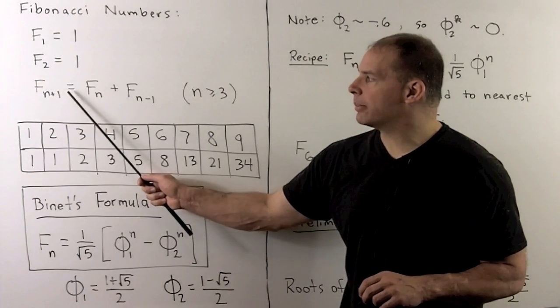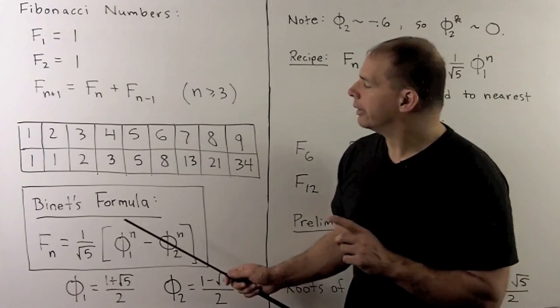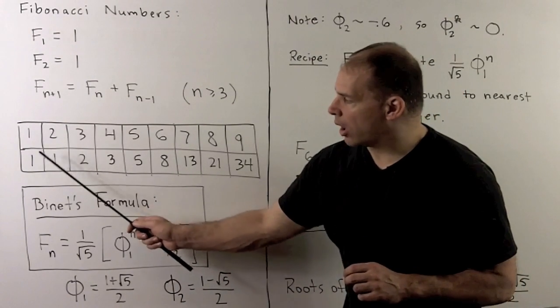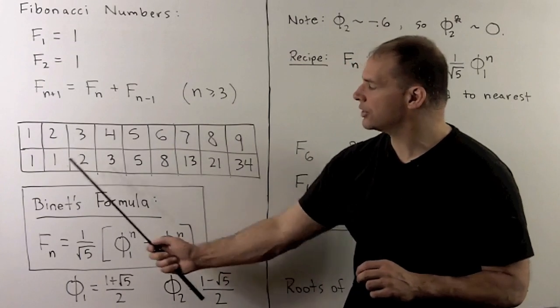So, the n plus first Fibonacci number is just the sum of the previous two. So that gives us, we have 1, 1, 1 plus 1 is 2, 1 plus 2 is 3, 2 plus 3 is 5, and so on.